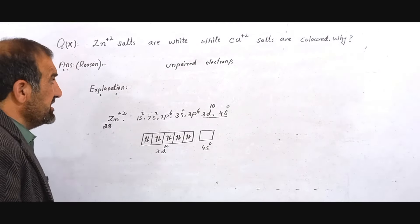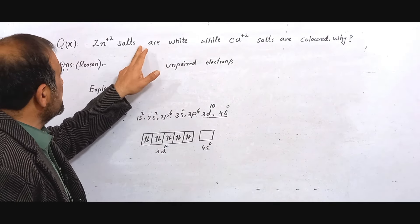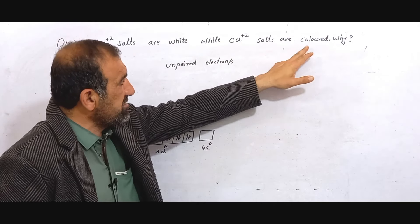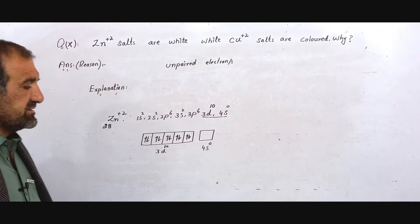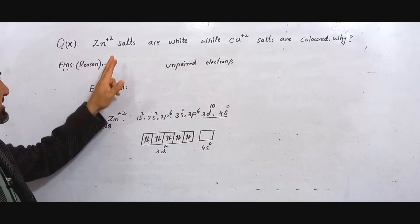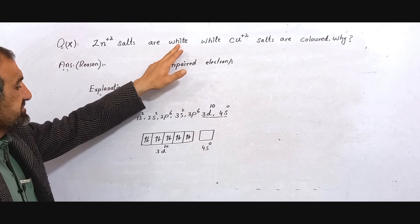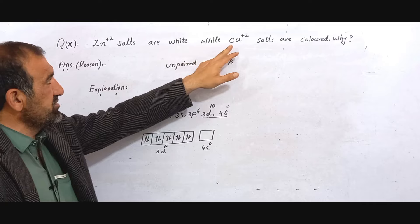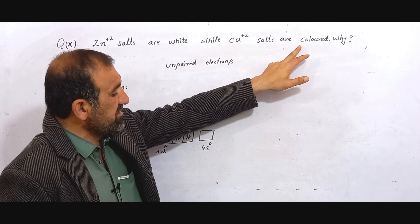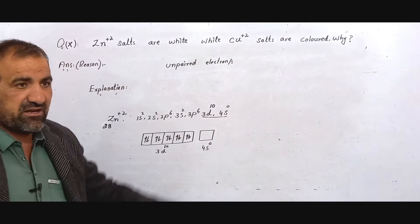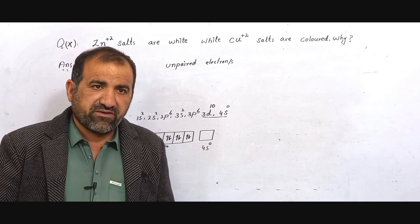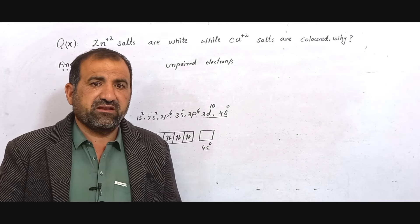For the paper, write: The Zn²⁺ salts are white while the Cu²⁺ salts are colored. Write like this: The Zn²⁺ salts are white because it has no unpaired electron, while Cu²⁺ salts are colored because it has unpaired electrons. In the explanation, write: To form color compounds, unpaired electrons are a must.